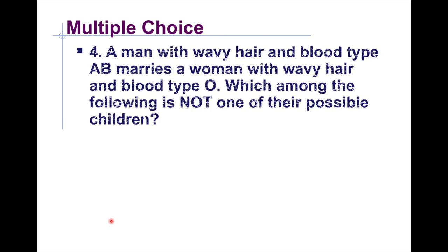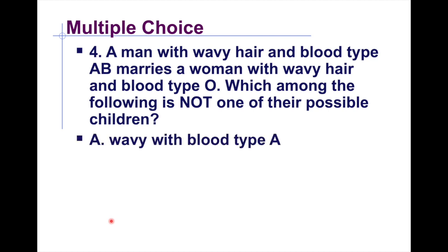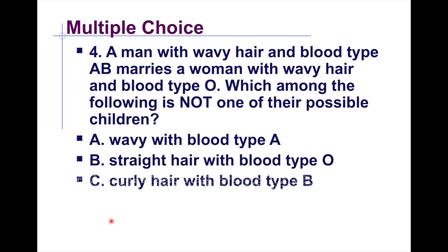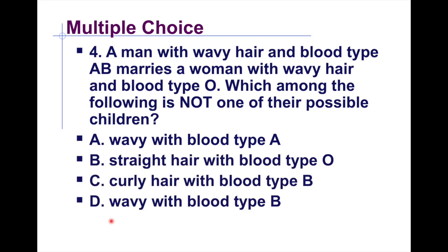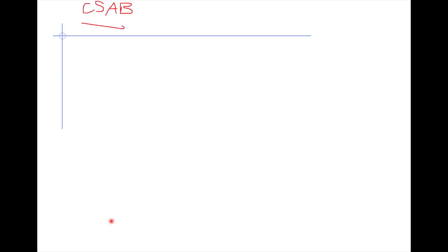Still on multiple choice: a man with wavy hair and blood type AB marries a woman with wavy hair and blood type O. Which of the following is not one of their possible children? Here we can see incomplete dominance, co-dominance, and multiple alleles all combined together in one problem.